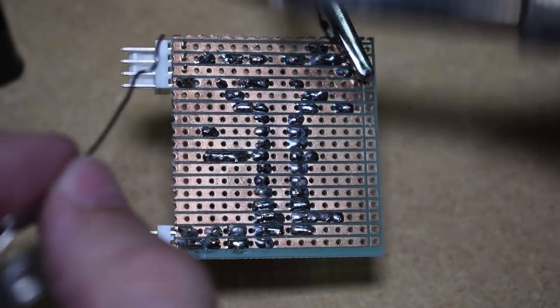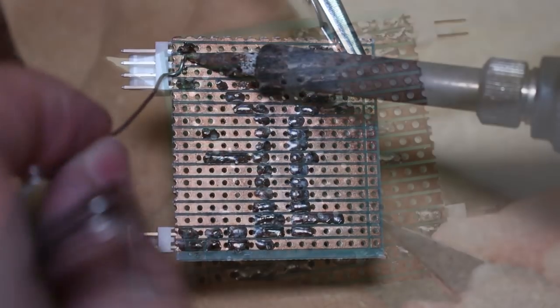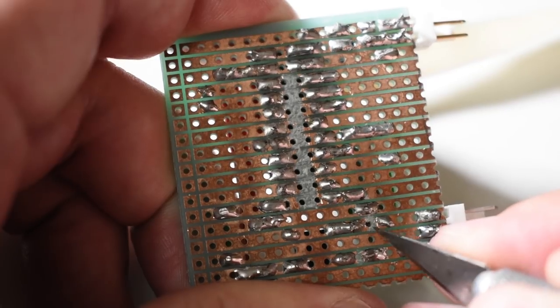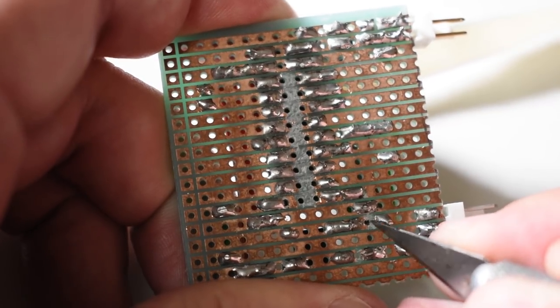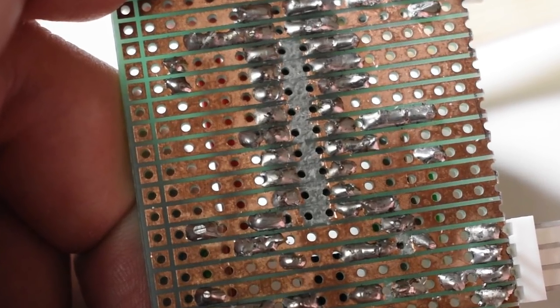Solder all the leads. Check the areas that need to be cut on the strip board, such as between the microcontroller pins and a few more. Make sure that you have no shorts between the tracks.